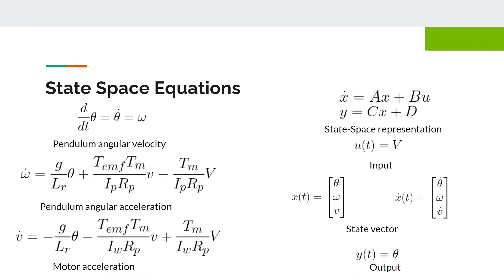Hi, my name is Hien and I will be presenting the state space equation for this project. The first one is very straightforward. It's the theta over the T, which is theta dot and omega. And this is the pendulum angular velocity. We were able to reference off some of the research papers that we found online. And this is our pendulum angular acceleration, omega dot. And this is the motor acceleration, V dot.